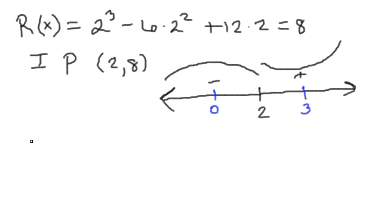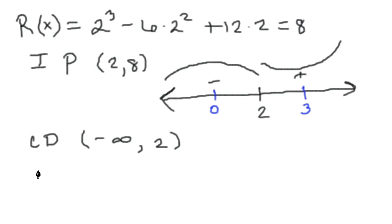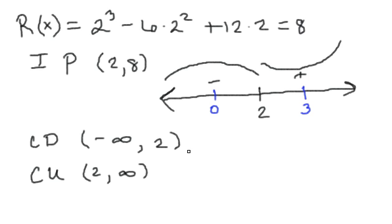So the graph is concave up from 2 to infinity. To write that out: concave down — I label it C and D — from negative infinity to 2, and concave up from 2 to infinity. We've found our inflection point and our concavity. Now let's take a look at the graph.